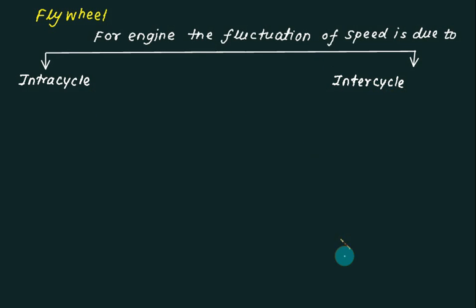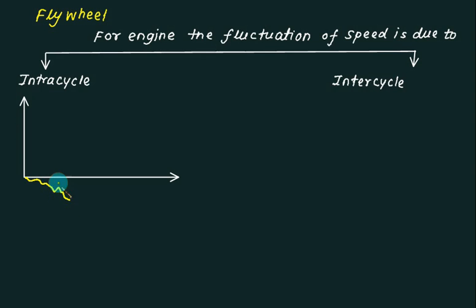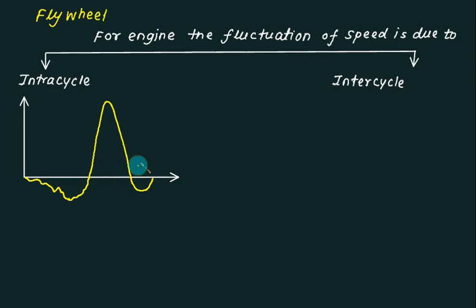What is the difference between intra-cycle and inter-cycle? Intra-cycle means you are executing a single stroke. So this one is your suction, this one is compression, this one is the power stroke, and this one is exhaust — completing one cycle. Whatever fluctuation is caused during one complete cycle is called intra-cycle.